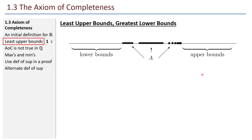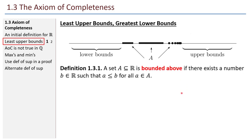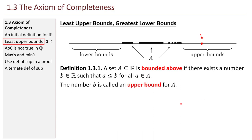Least upper bounds, greatest lower bounds. Here's how we might imagine a set A. I think of the real number line, the x-axis. Set A is a set of real numbers — maybe it has some intervals and some discrete points. Those real numbers that are greater than or equal to all the numbers in A are the upper bounds of A, and those less than or equal to all the numbers in A are the lower bounds. A set A is bounded above if there exists a number B such that A is less than or equal to B for all elements in the set. That number B is called an upper bound.